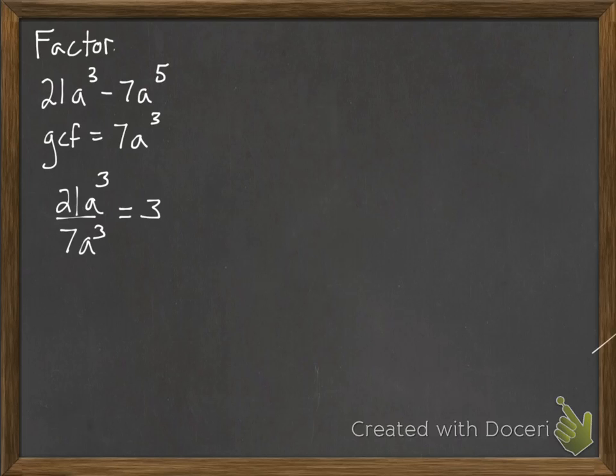And we do the same thing with the 7a⁵. 7a⁵ divided by 7a³. Well, 7 divided by 7 is 1. You can write that as a 1 if you want. You don't have to write the 1 down. a³ and a⁵ would leave us with an a². So normally we would just write a².